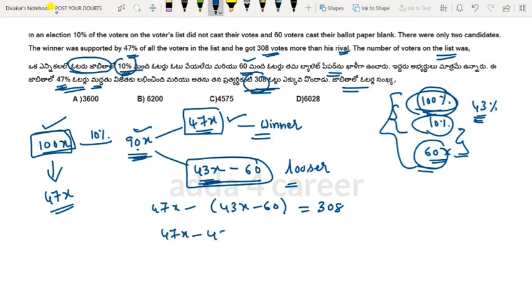47x minus 43x plus 60 equals 308. So 47x minus 43 equals 4x. 4x minus 60 equals 308. So 4x equals 368, and x equals 62.